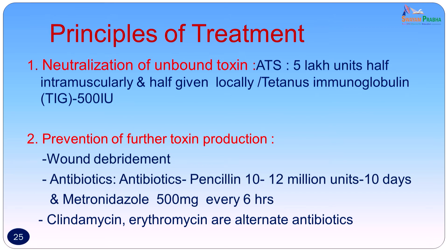Prevention of further toxin production is the next priority, done by adequate wound debridement. If the wound becomes aerobic, the bacteria will not multiply and fresh toxin will not be produced. Along with wound debridement, antibiotics can be given — penicillin and metronidazole, both of which have action on Clostridium tetani. Resistance has not been reported, so antibiotic sensitivity testing is not required. The moment tetanus is suspected, it is important to start antibiotics well in time. If the patient has an allergy to penicillin, alternative antibiotics such as clindamycin and erythromycin can be considered.